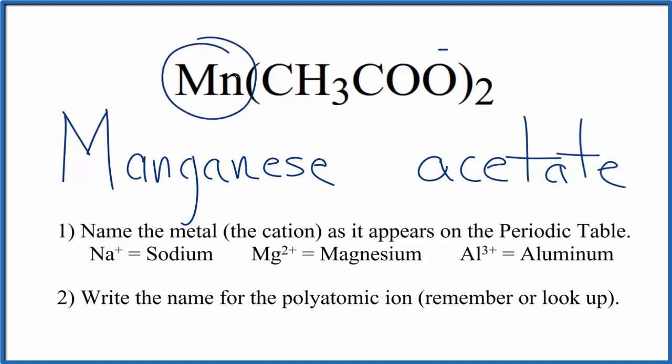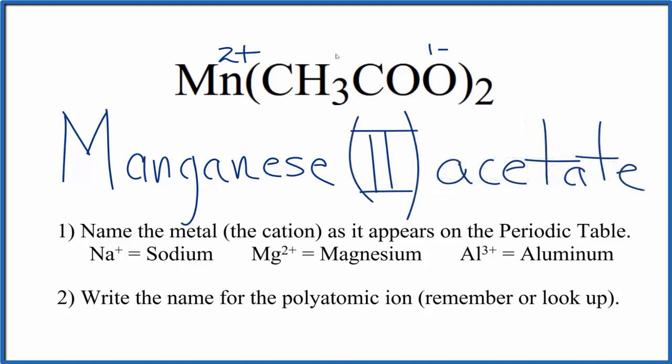Because manganese is a transition metal, we need to write the charge between the names. The acetate ion is one minus, and we have two of them. Two times one minus is two minus. The manganese has to be two plus. So we call this manganese two, with the Roman numeral in parentheses, acetate.